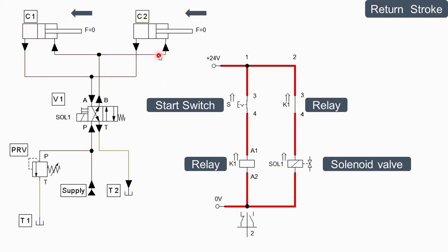As fluid is admitted on the rod end of the cylinder, we get the return stroke. The fluid from the other side comes collectively to port A and then goes to the tank or reservoir, as shown in the figure.